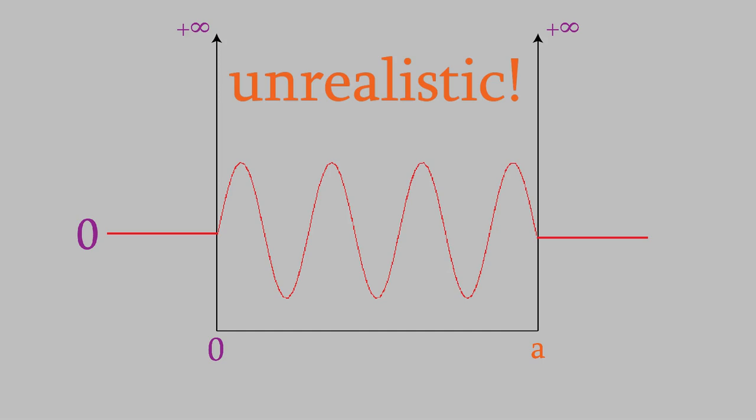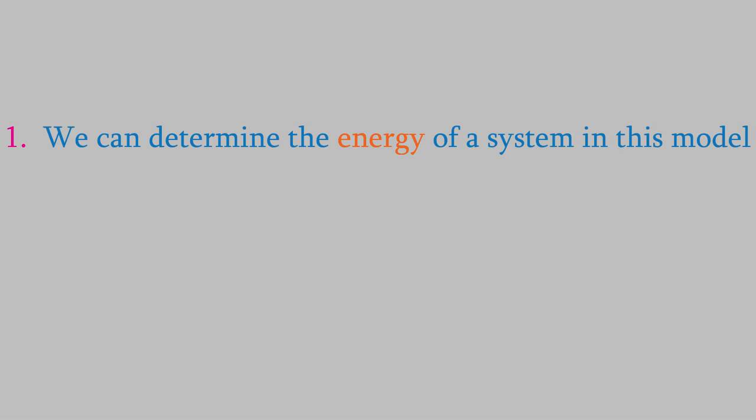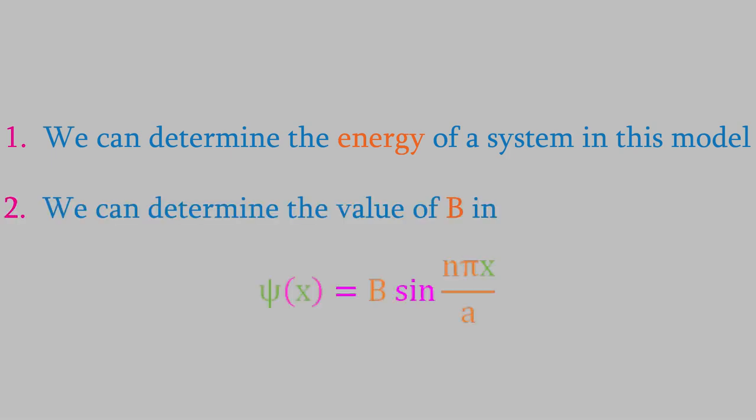There are two useful things that we can do now, right away. First, we can use the wave function to find the energies of some real chemical systems. And second, we can find out what the constant B is equal to. You might recall that we didn't find out what B is when we talked about wave functions in the last video. Today we'll figure out B, which will mean that there are no unknown terms left in our wave function — so we'll know exactly what the form of the wave function is for this system.